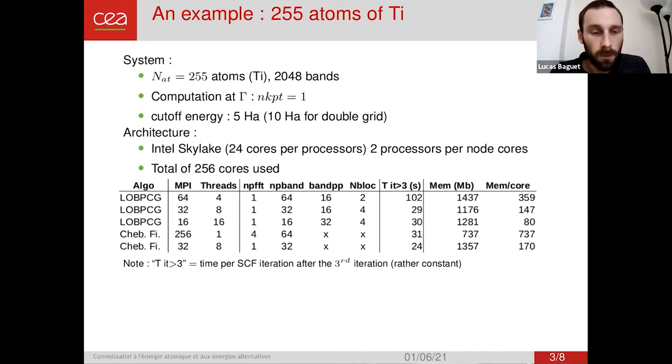The architecture, the computation has been done on Intel Skylake processors with a total of 256 cores. So the results are presented in this tabular here. On the right hand side here, there is a memory usage. And on that column, it is the time spent in one self-consistent iteration. And it has been observed that this time is rather constant after the third self-consistent iteration.